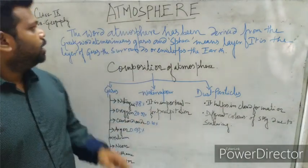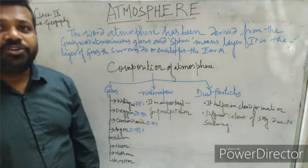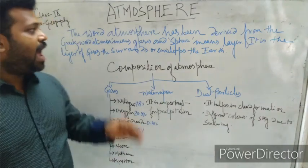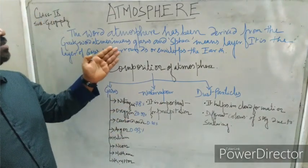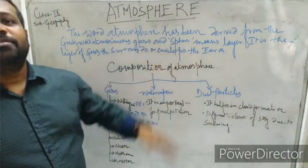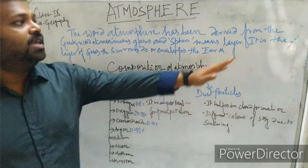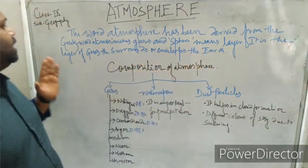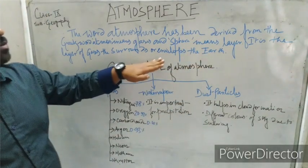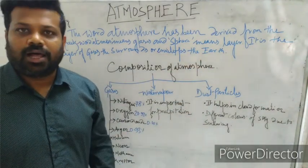The word 'atmosphere' has been derived from Greek words — 'atmos' means gases and 'sphere' means envelope. So, atmosphere is the layer of gases that surrounds or envelops the earth.